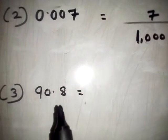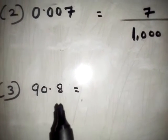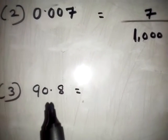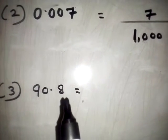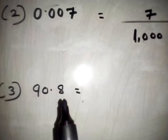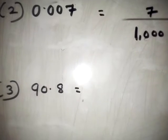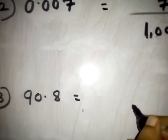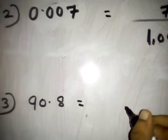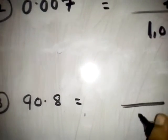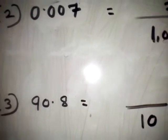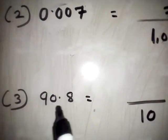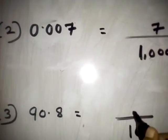Look at the third one: 90.8. How many decimal places? 1 decimal place. So the denominator is 10. And write this number without the decimal point in the numerator.